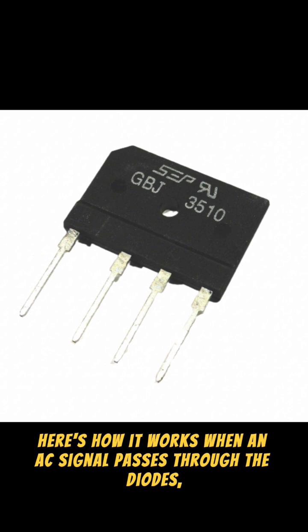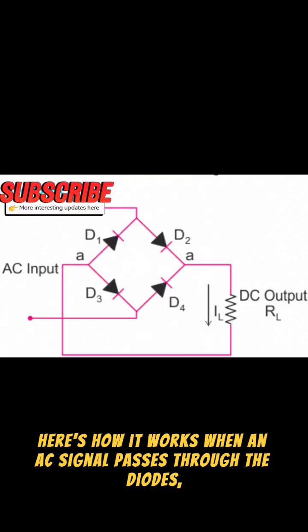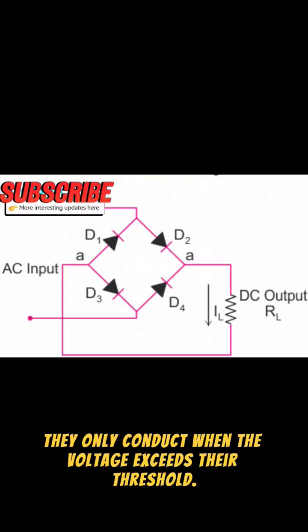Here's how it works: when an AC signal passes through the diodes, they only conduct when the voltage exceeds their threshold. This means that during each half cycle of the AC signal, two diodes are conducting. The result is a half-wave rectified signal that's constantly changing polarity.